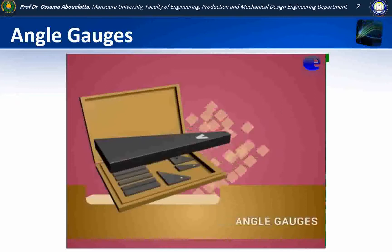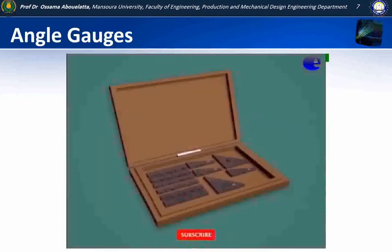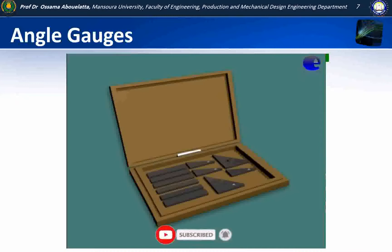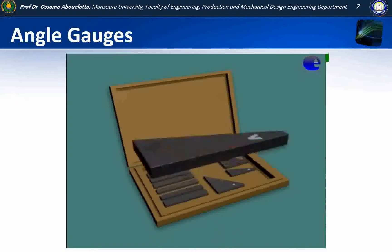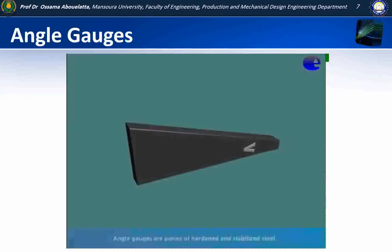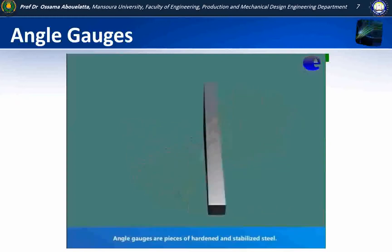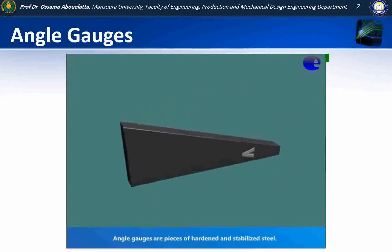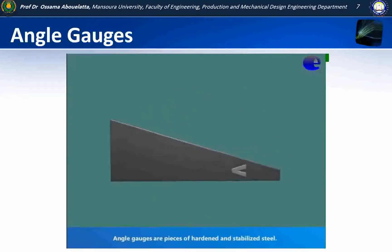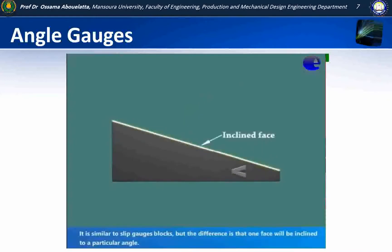A visual representation of angle gauges is shown in this video. Angle gauges are pieces of hardened and stabilized steel. It is similar to slip gauge blocks, but the difference is that one face will be inclined to a particular angle.